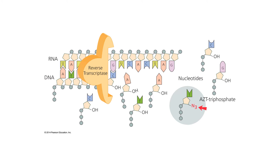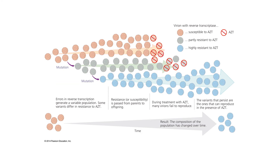Reverse transcriptase is going to be a key player in our story in evolutionary biology. This story explains how natural selection causes the population of HIV viruses to go from susceptible to resistant. The key feature is that reverse transcriptase generates a variable population of viruses with different gene structures, making some of them more resistant and some less resistant. Over time, those become the highly resistant variants in the population. You definitely need to know this story well.